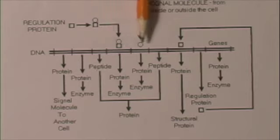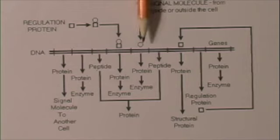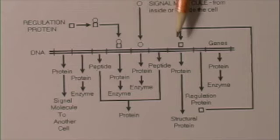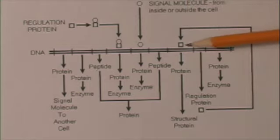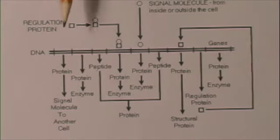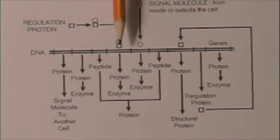Something has to turn these genes on and off, and this happens with regulator proteins and signal molecules. The signal molecule might come from another cell and act directly on the gene to turn it on, or a regulator protein may be produced by some other gene and act on a nearby or different gene. Sometimes the regulator protein binds to the signal molecule and activates the gene. This is how protein synthesis is controlled.